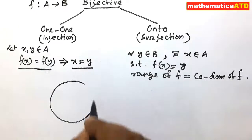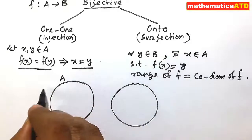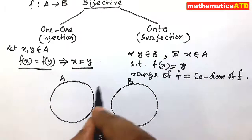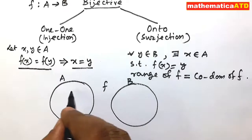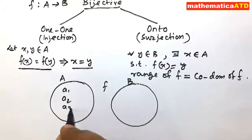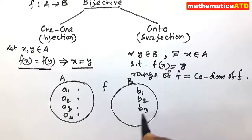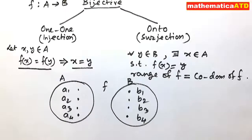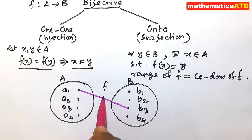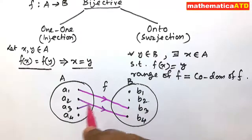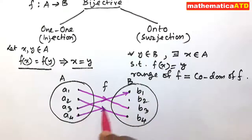Let A be the domain and B be the codomain, and the function is f. We consider elements a1, a2, a3, and a4 in set A, and elements b1, b2, b3, and b4 in set B. We find that a1 maps to b3, a2 maps to b4, a3 maps to b1, and a4 maps to b2.